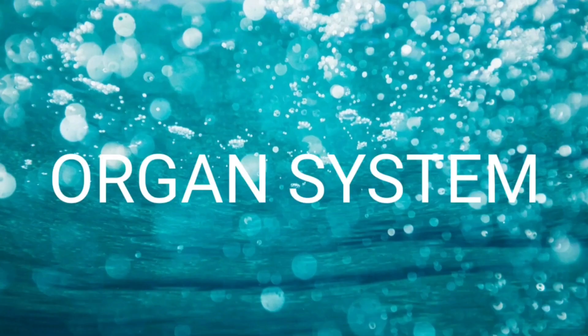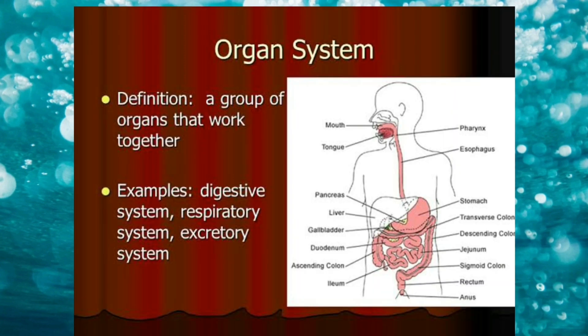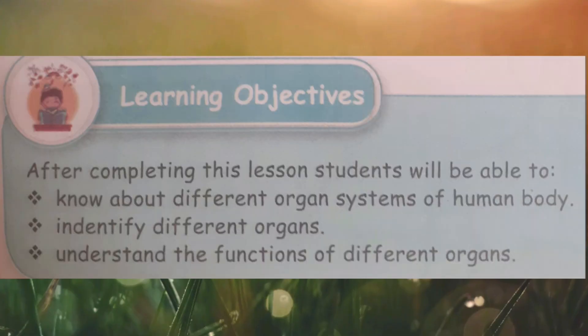The topic of the lesson is organ systems. Organ systems are groups of organs that work together to perform one or more functions such as respiration, digestion, excretion, circulation etc. From this lesson you will be able to know about different organ systems of the human body, identifying different organs, and understanding the function of different organs.